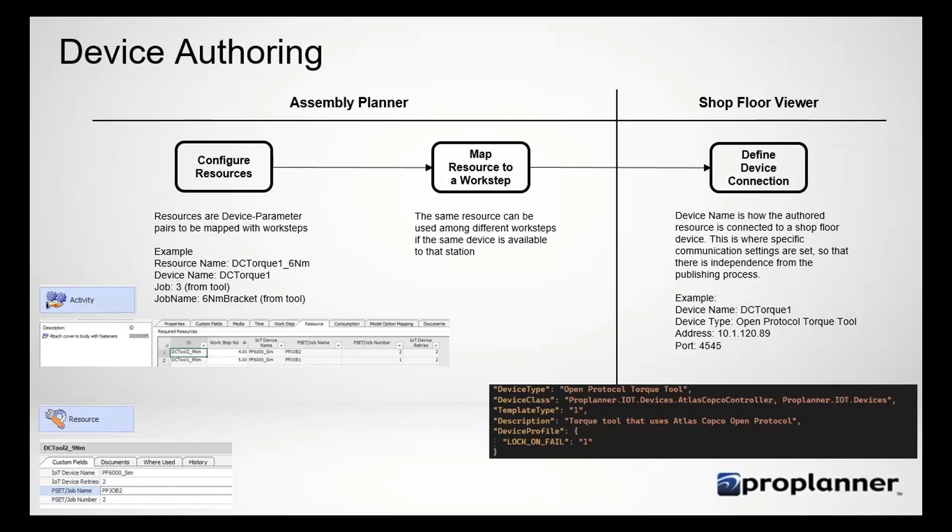All the shop floor viewer does is say, oh, do this activity, do this work step. For this model option, I need to send this information to this tool. And that's what it does. And you're going to see us do that here in just a moment.